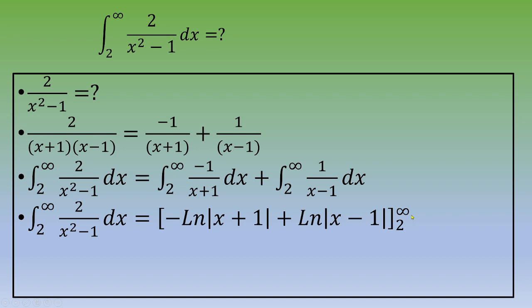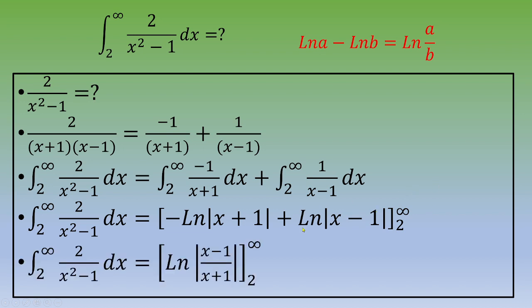We can simplify using the logarithm rule: ln(a) minus ln(b) equals ln(a over b). Applying this, the integral from 2 to infinity of 2 over x squared minus 1 dx equals ln of absolute value of x minus 1 over x plus 1, evaluated between 2 and infinity.